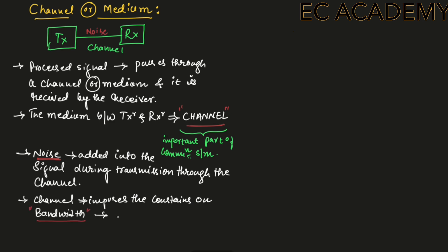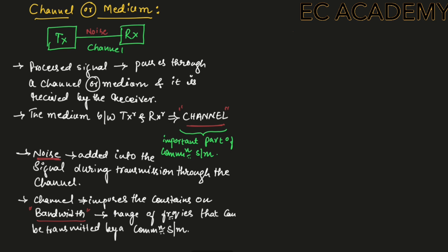Bandwidth is the range of frequencies that can be transmitted by a communication system. Channel imposes some limitations or constraints on bandwidth.